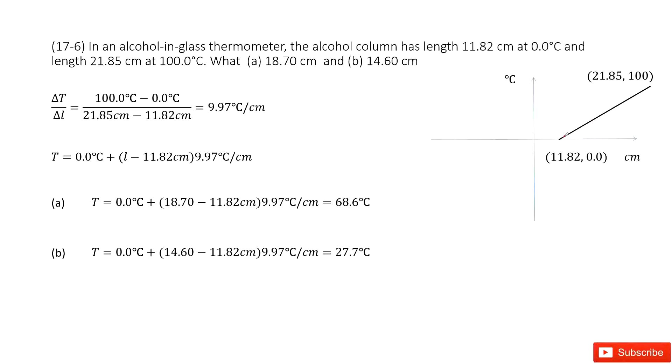So we can see the two points are given. The first point is when the temperature is zero and the column's length is 11.82 cm. When the temperature becomes 100 degrees, the length of column is 21.85 cm.